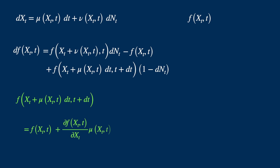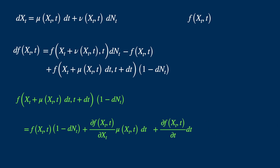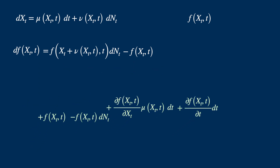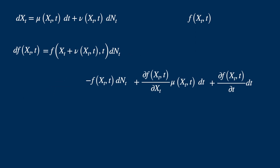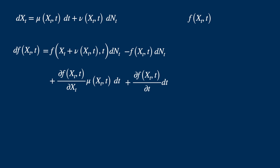We then apply the Taylor series to the second term in two variables: the derivative with respect to x times mu delta t, plus the derivative with respect to t times dt, and this is multiplied by one minus dn. Since dt times dn equals zero, we can simplify by removing those cross terms. Expanding the brackets, multiplying f by one and then by minus dn, and cancelling the f terms with plus and minus signs, then rearranging, gives us Ito's Lemma for a function of x and t, where x is a transformation of the simple Poisson process.